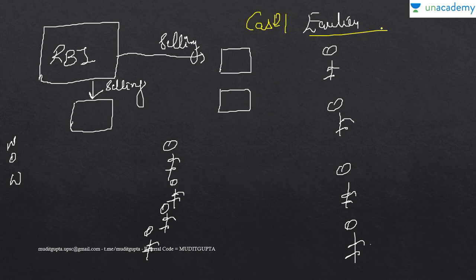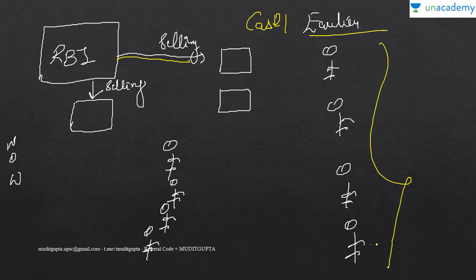In Case 1, consider an earlier scenario where RBI is selling securities. Let us say there are 4 people who want to purchase the security, but RBI is issuing only 2 securities — so 4 people competing for 2 securities.